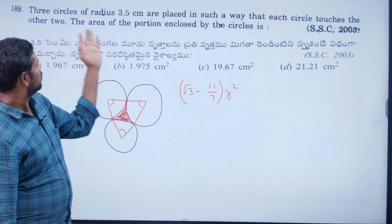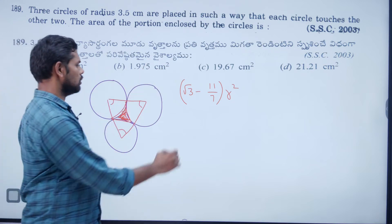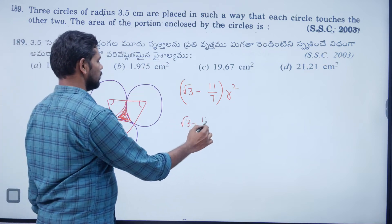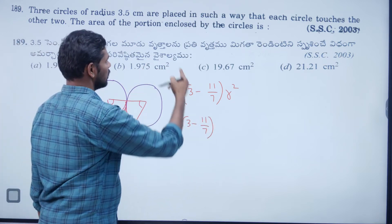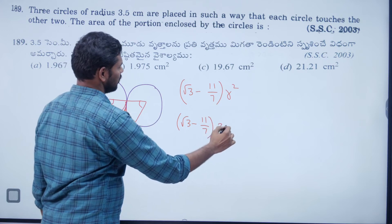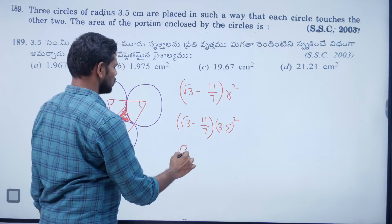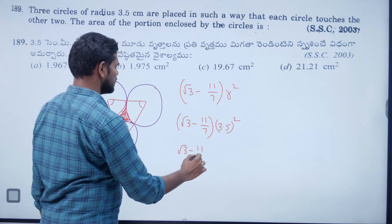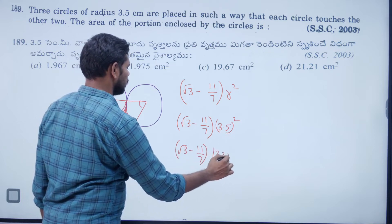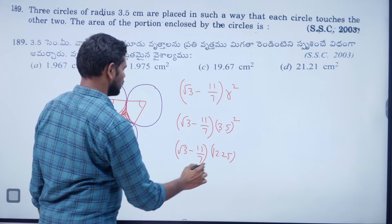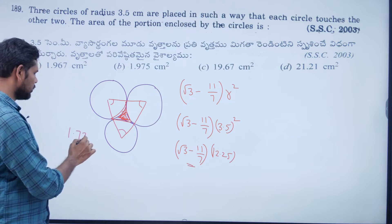The radius is 3.5. So the formula gives: (√3 − 11/7) × (3.5)² = (√3 − 11/7) × 12.25. √3 ≈ 1.732 and 11/7 ≈ 1.571.